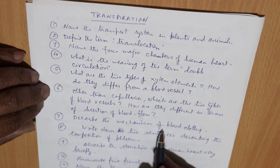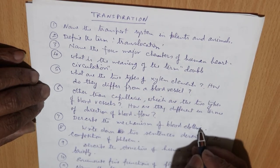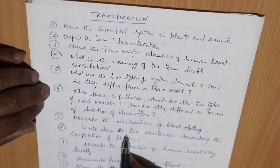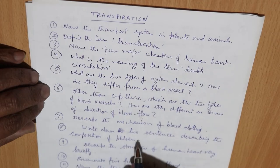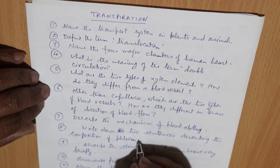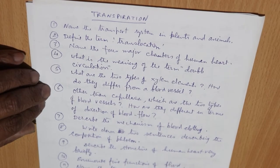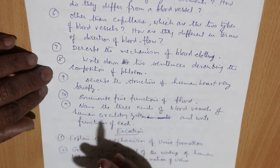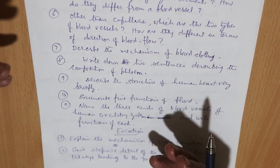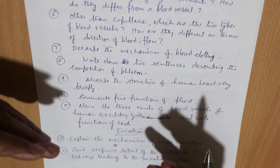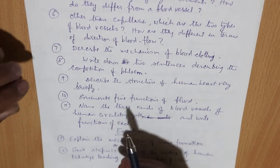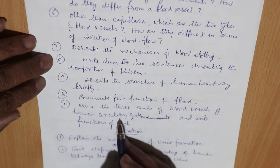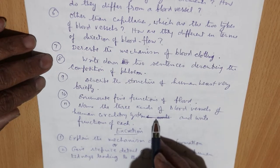Describe the mechanism of blood clotting — how does blood clot at the surface of an injury? Write two sentences describing the composition of phloem tissue. Describe the structure of the human heart very briefly, including the chambers, shape, external features, and partition of chambers. Enumerate five functions of blood, then name three kinds of blood vessels of the human circulatory system and write the function of each.